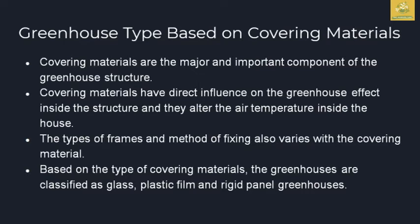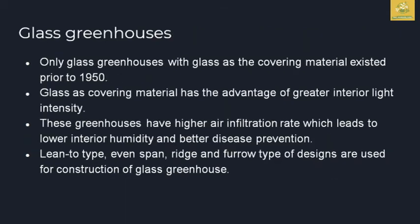Covering materials are the major and important component of greenhouse structures. They have a direct influence on the greenhouse effect, altering air temperature inside the structure. The types of frames and method of fixing also vary with the covering material. Based on covering material, greenhouses are classified as plastic film, rigid panel, and glass greenhouses.